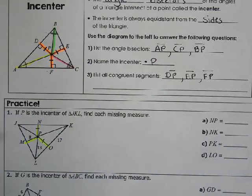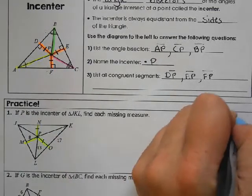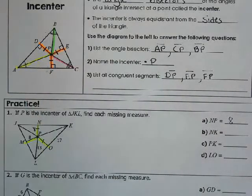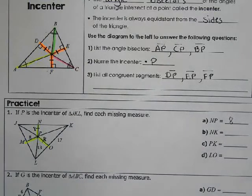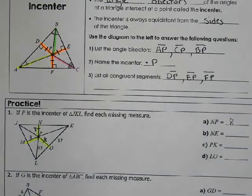So all segments highlighted in yellow will be congruent. So NP would be 8. PO, they don't have there, but that would also be 8. And then they want NK.